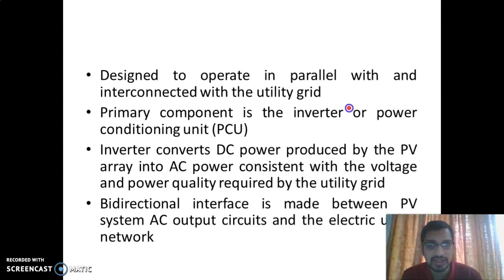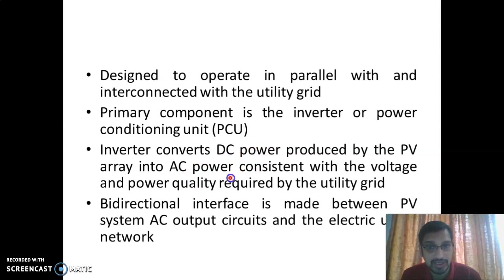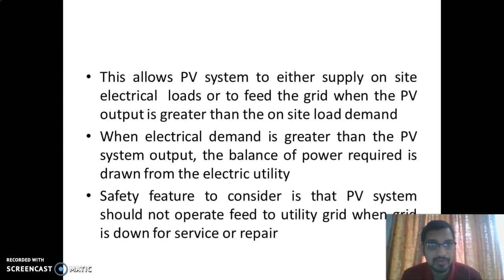The important points of the grid-connected system: the primary component is the inverter or power conditioning unit, which converts DC power produced by the PV array into AC power with consistent voltage and power quality. A bidirectional interface is made between the PV system and the AC output circuit to export or import power, and the PV system is connected in parallel with the utility grid.